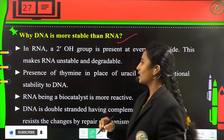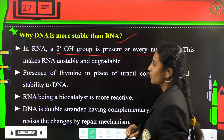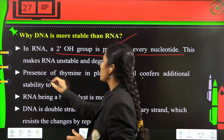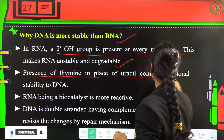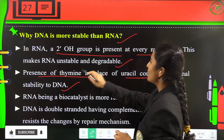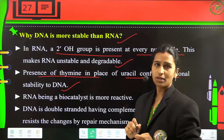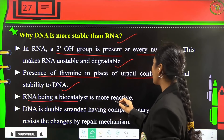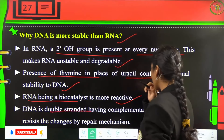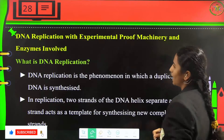DNA is more stable than RNA because in RNA the 2'-OH group is present at every nucleotide, making it unstable and easily degradable. The presence of thymine in place of uracil confers additional stability to DNA. RNA, being a biocatalyst, is more reactive. DNA is double-stranded with complementary strands that resist changes through repair mechanisms.